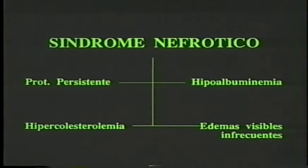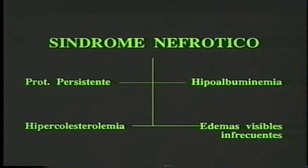¿Qué ocurre ahora? El riñón pierde las proteínas en forma significativa y el hígado las repone. Cuando la cantidad de proteína que se pierde por orina es sustancialmente mayor a la que repone el hígado, se cae en lo que se denomina el síndrome nefrótico. El síndrome nefrótico está caracterizado por hipoalbuminemia, albuminuria, proteinuria persistente, edemas e hipercolesterolemia. El edema aparece como correlato de la hipoalbuminemia; ustedes saben que la albúmina mantiene la presión oncótica dentro de los vasos. Al perderse la albúmina por el riñón, se producen los edemas.